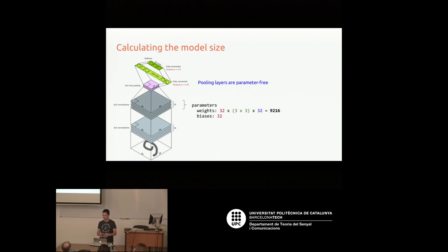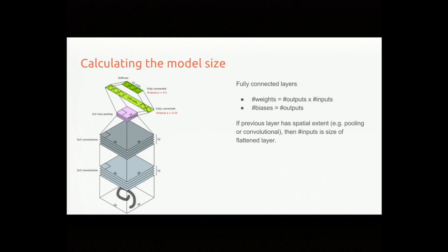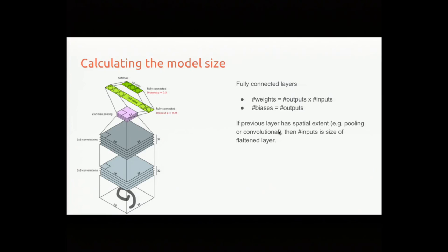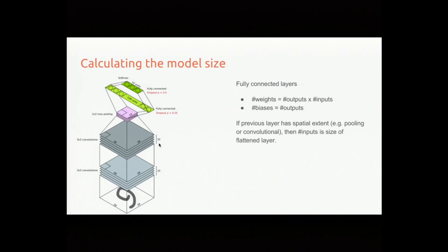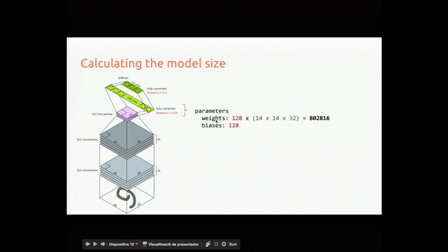Fully connected layers are simpler: the number of weights is just outputs × inputs, since each input is connected to each output, and the number of biases is the number of outputs. If the previous layer had spatial extent — like a pooling or conv layer — the number of inputs is the flattened size. For a 14×14 layer with 32 filters, that's about 802,000 parameters in the following fully connected layer of 128 units.